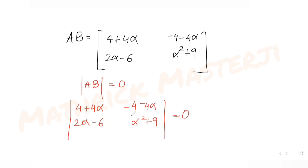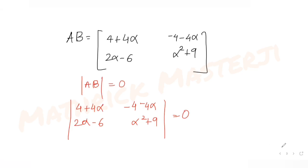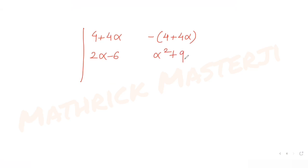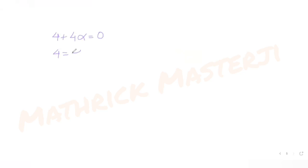What I can do is take out -1 common from the second term so it becomes the same as the first term. I can factor out (4+4α) as common, giving (4+4α)·det[1, -1; 2α-6, α²+9] = 0. From this I can equate 4+4α = 0, which gives 4 = -4α, so α = -1.